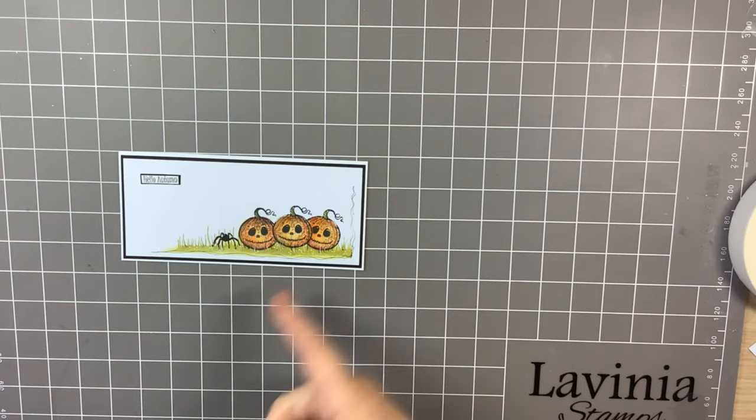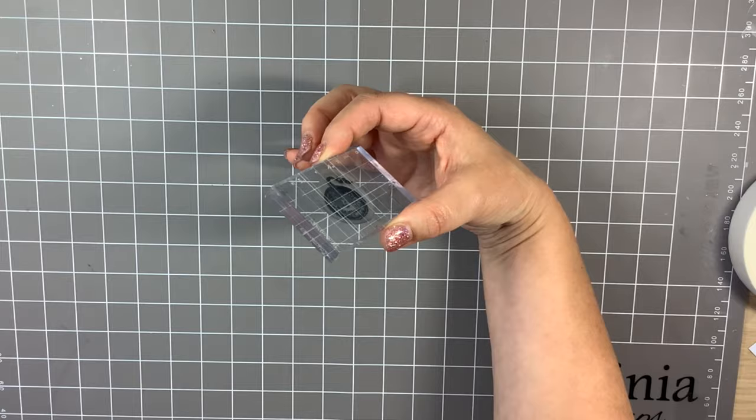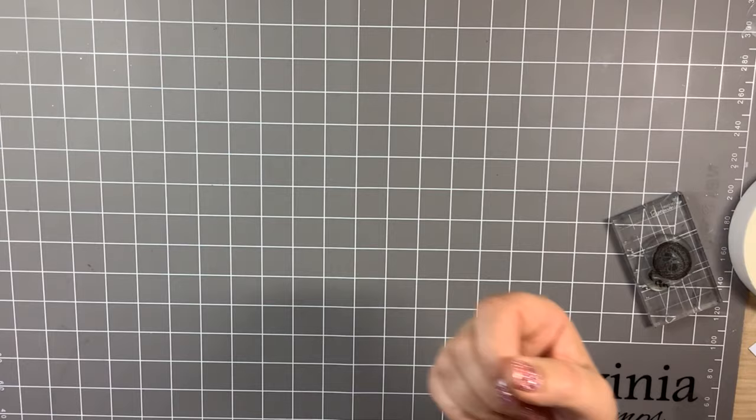Hello there, Julie here and I'm going to share with you today how I made this little card. I started off by stamping my ickle pumpkin from the set onto a masking sheet and cutting them out three times.